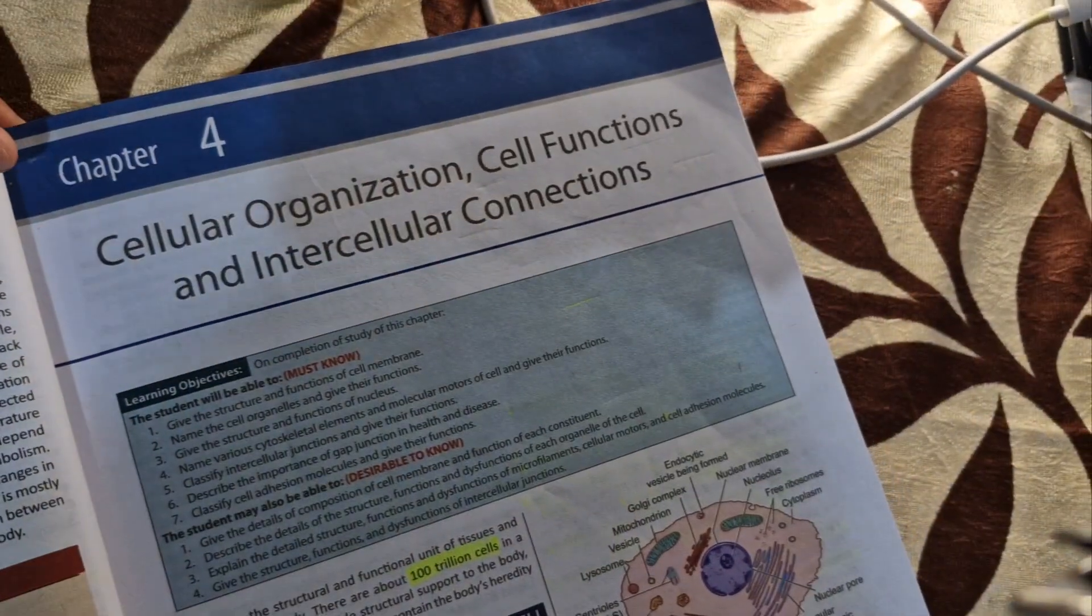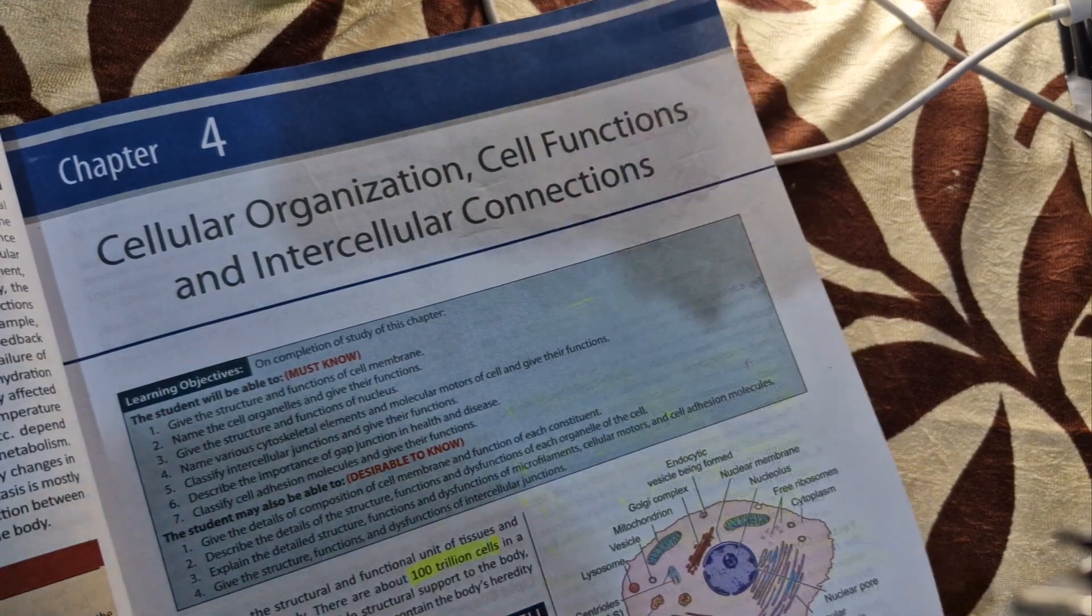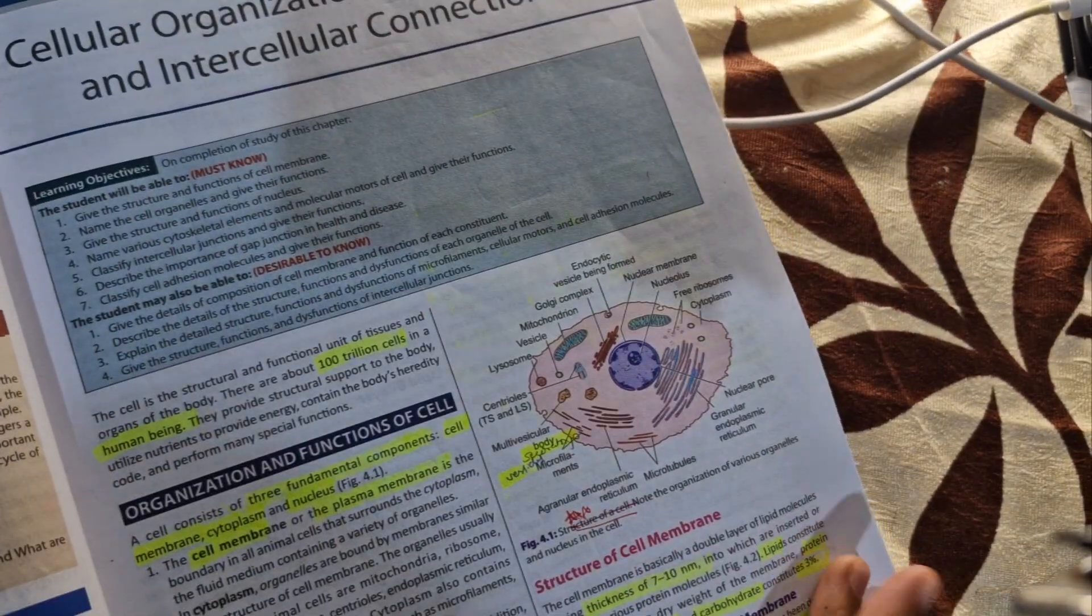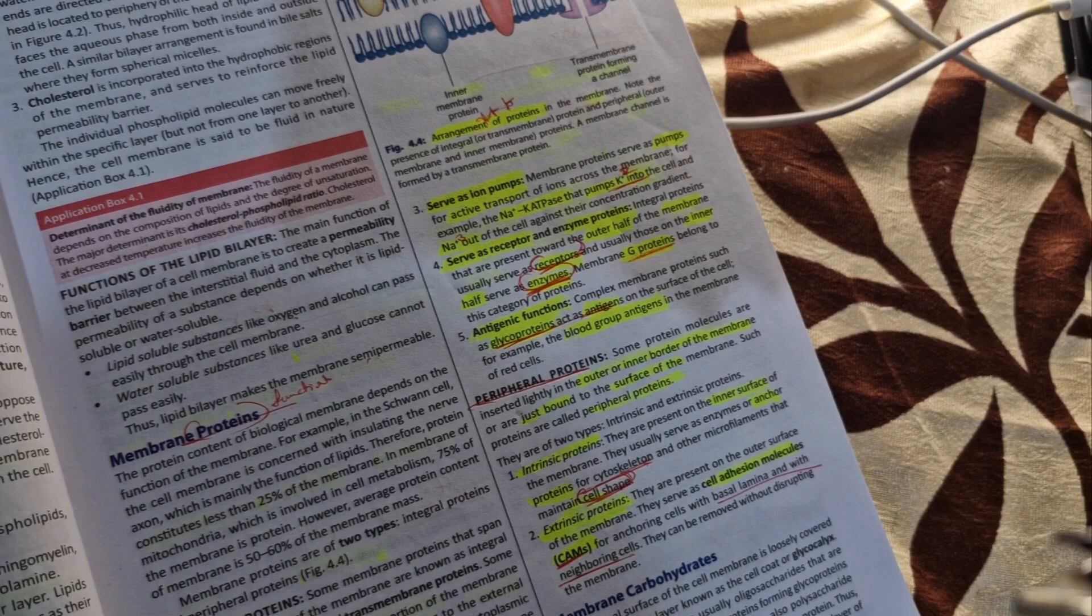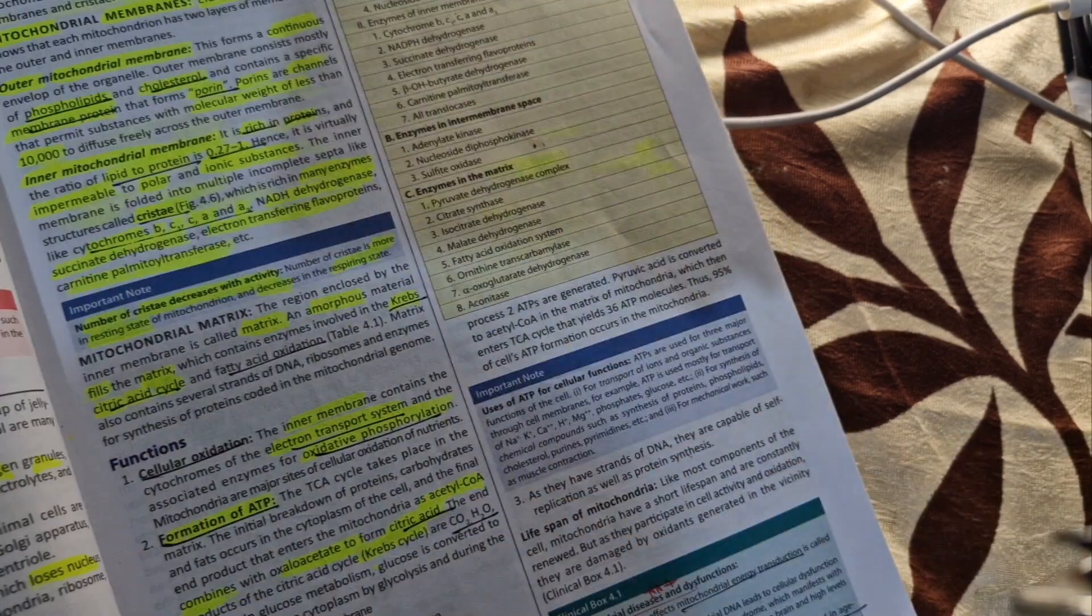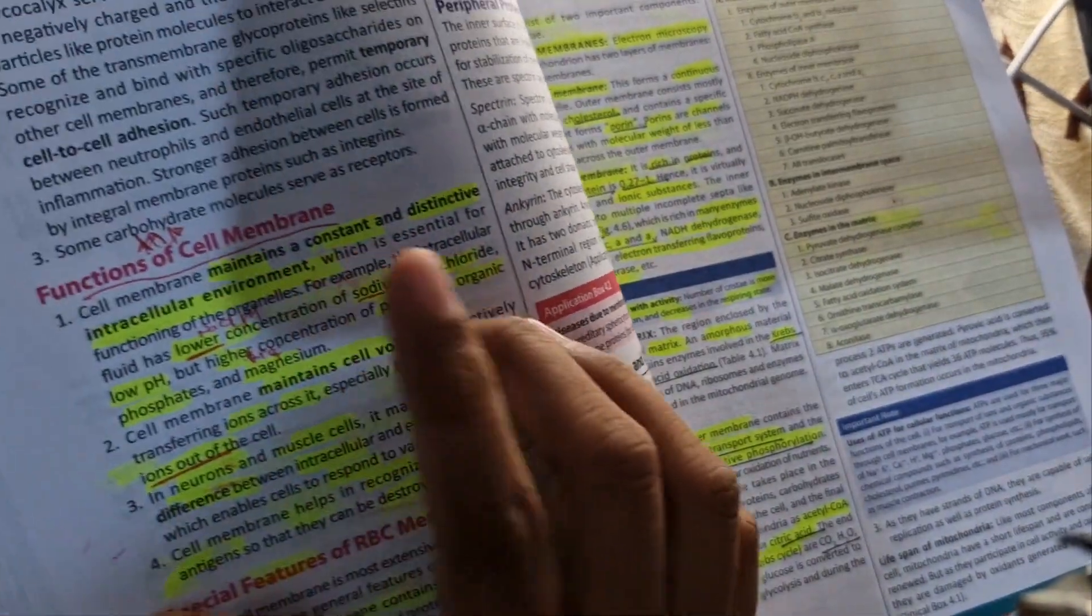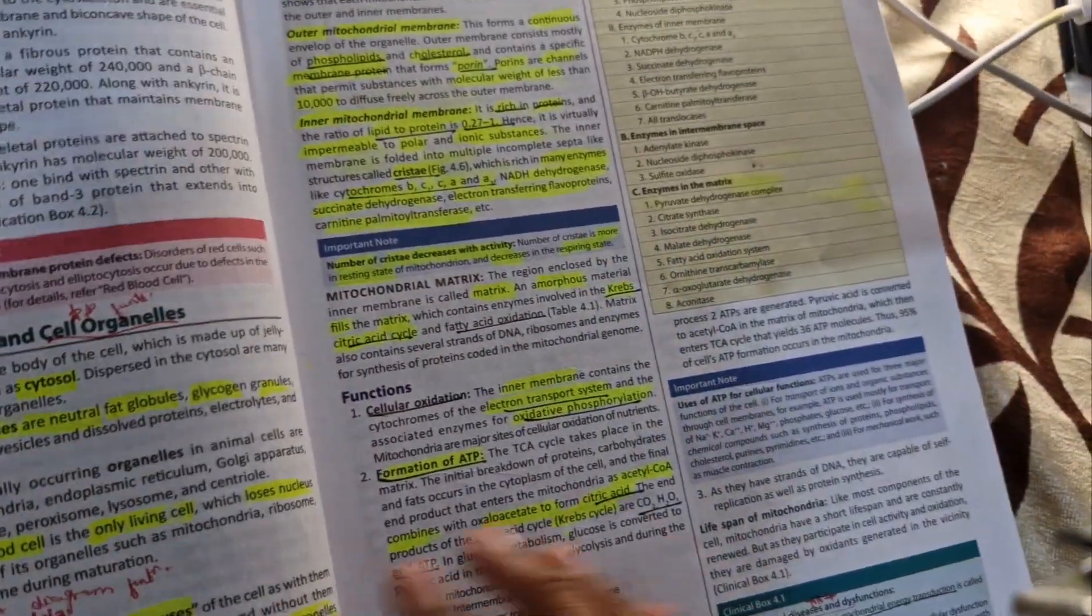From chapter 4, cellular organization, cell functions and intercellular connections - structure of cell is important. Then protein functions are important, types of protein that are peripheral and integral proteins. Cell organelles and functions of cell membrane is important. Cell organelles mitochondria is important.